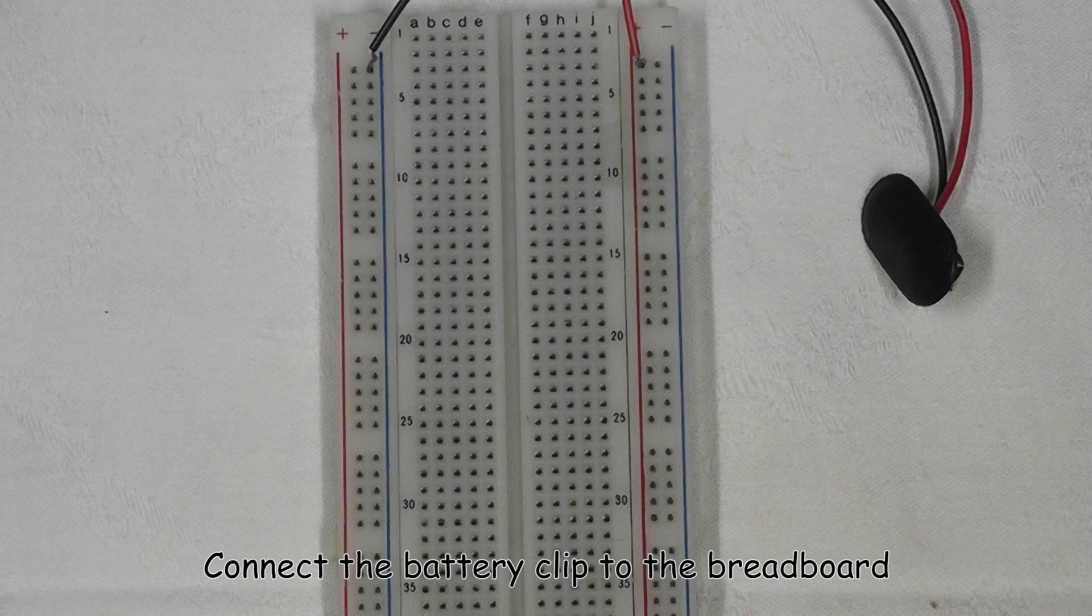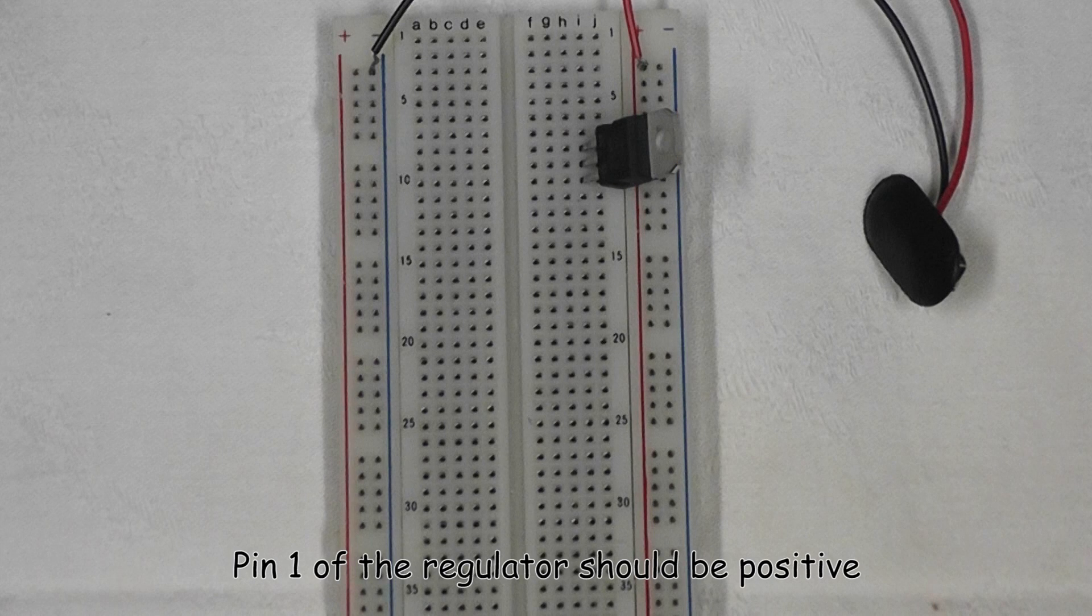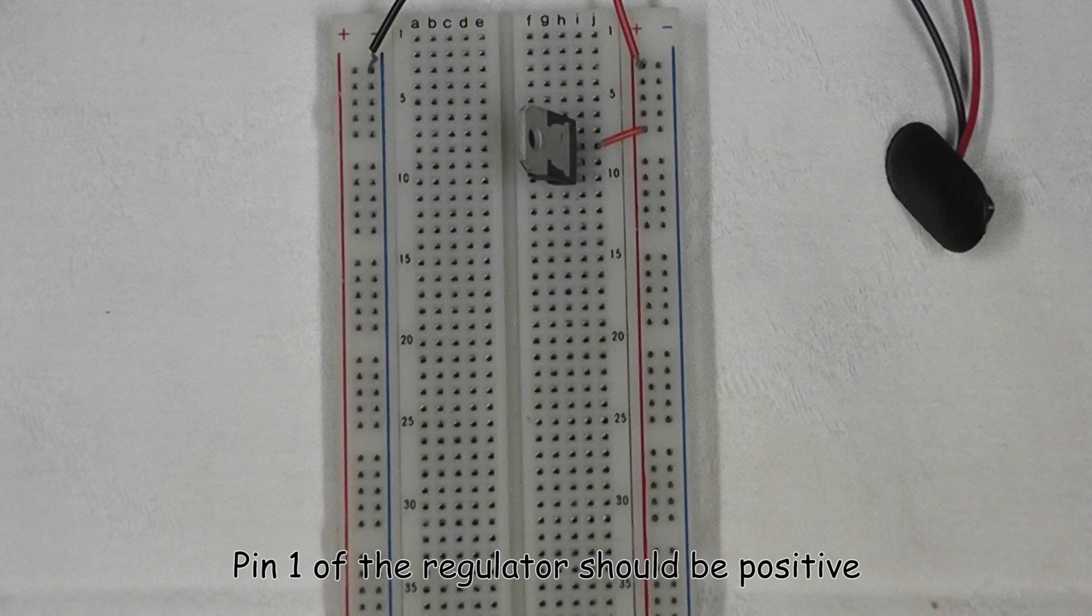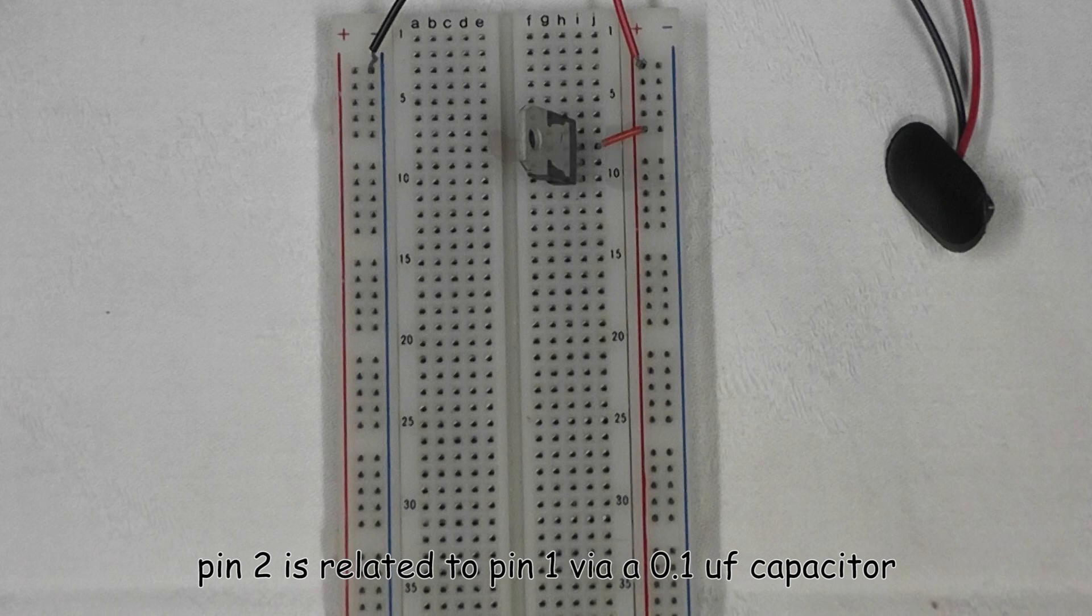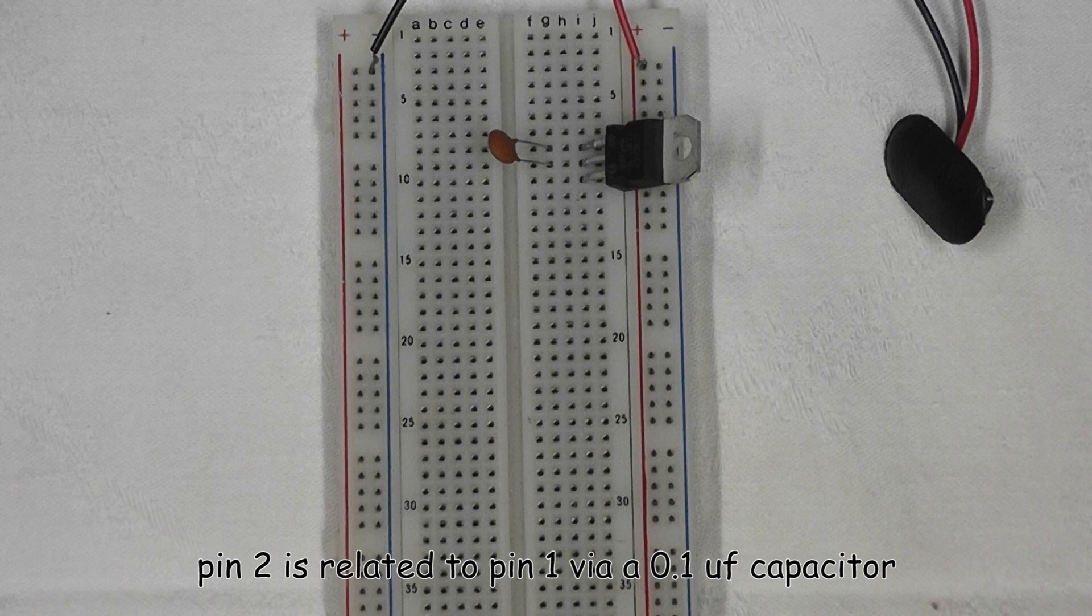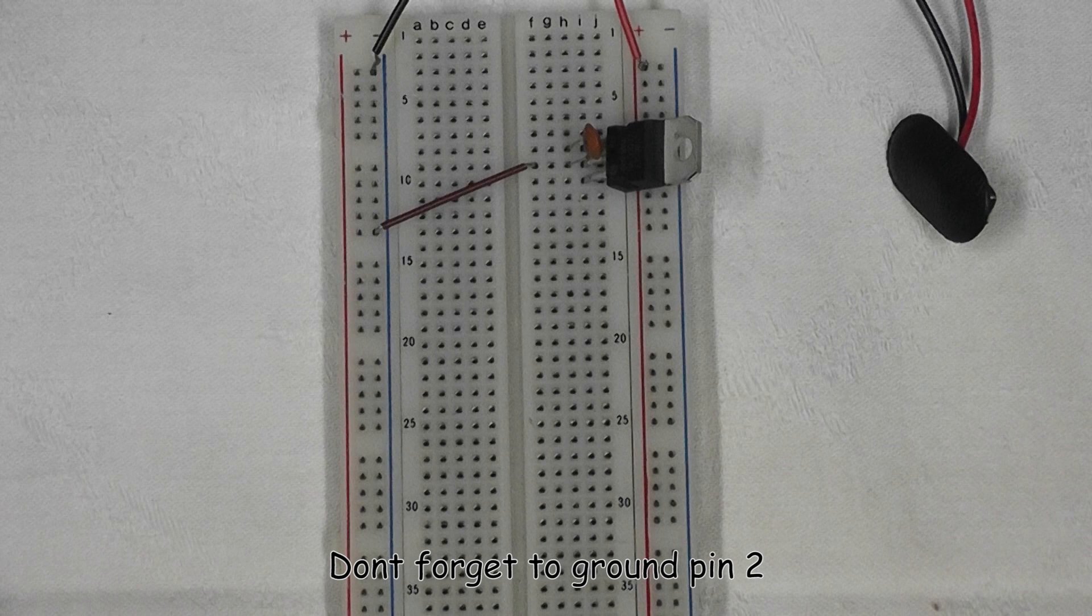Connect the battery clip to the breadboard. Pin 1 of the regulator should be positive. Pin 2 is related to pin 1 via a 0.1 microfarad capacitor. Don't forget to ground pin 2.